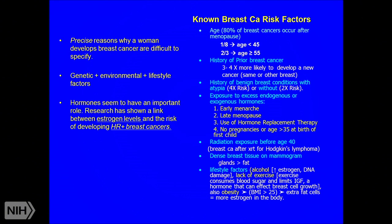If a woman has had a prior breast cancer, that puts her at much higher risk for a second breast cancer. A history of benign breast conditions, with or without atypia, also increases risk. Exposure to excess endogenous or exogenous hormones — through early menarche, late menopause, or use of hormone replacement therapy — is also a known risk factor.